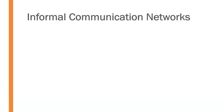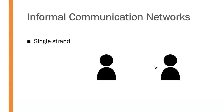We can start with what we call a single strand communication network. Single strand is just one person sharing information with another person — like a relay race — then that second person may share it with a third, the third with a fourth, and so forth. It's one person sharing information with one other person in that single strand.